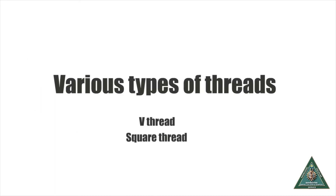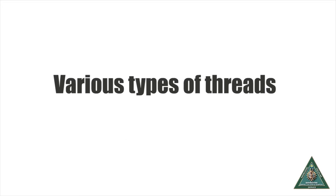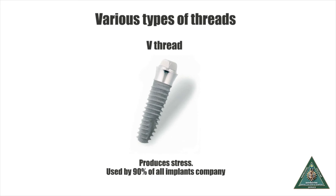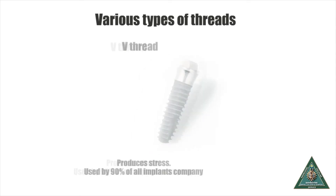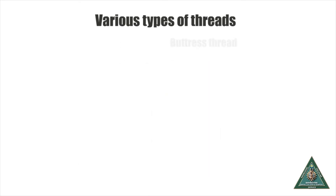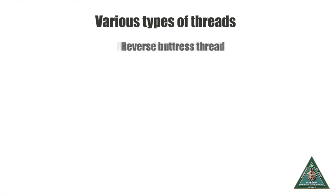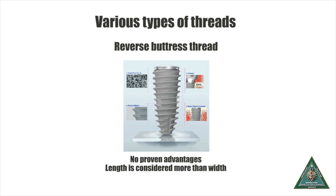The commonly used thread designs are V-thread, square thread, buttress thread, and reverse buttress thread. The V-thread is claimed to produce stress, but 90% of all implant companies use this design. The square thread is claimed to produce the least stress, but only one major company uses it. The buttress thread is considered effective in transferring load, though there is no proof of its advantages. The reverse buttress thread also does not appear to have any proven clinical advantages.